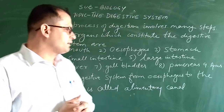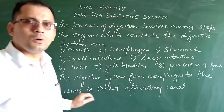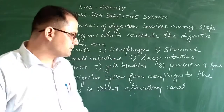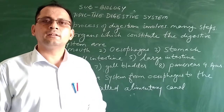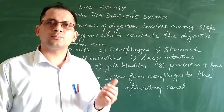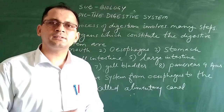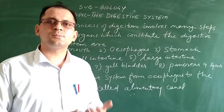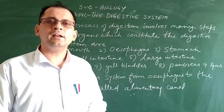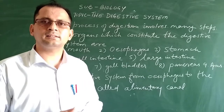The digestive system from the food pipe (esophagus) to the anus includes various organs such as the stomach, pancreas, liver, gallbladder, large intestine, and small intestine. The digestive system from the esophagus up to the anus is known as the alimentary canal.